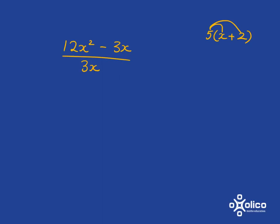So to make it completely clear, I'm going to say this 12x squared needs to be divided by the 3x and this 3x needs to be divided by the 3x.